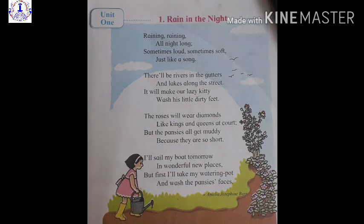The name of the poem is 'Rain in the Night.' But firstly, we should know who has written this poem. The name of the poet is Amelia Josephine Burr. Firstly, we will recite the poem — I will read and then, children, you all repeat after me. So, let's start.